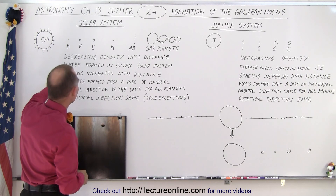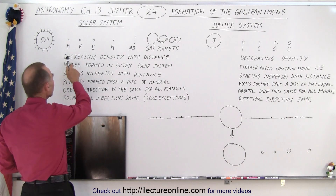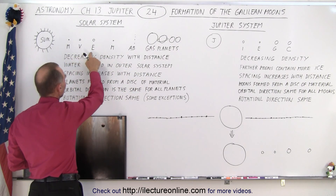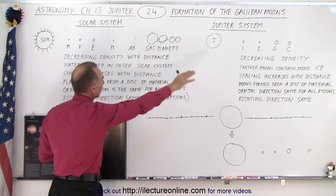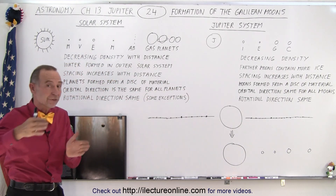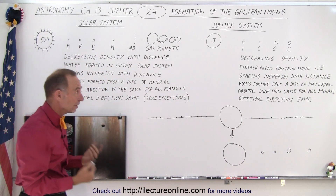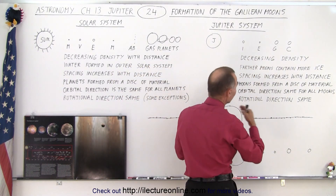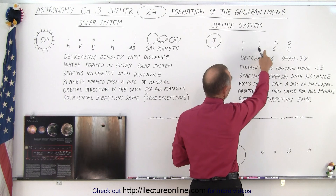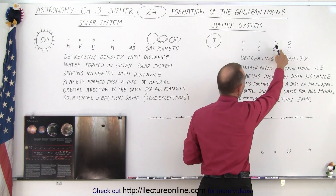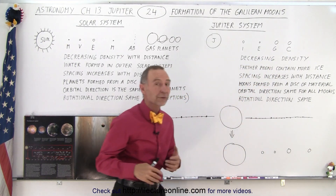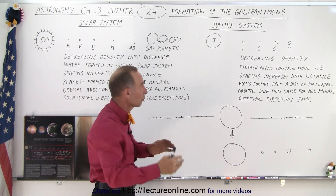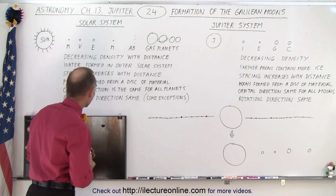Then we look at the spacing, and it turns out we see increasing spacing as we go further and further out — from Mercury to Venus to Earth to Mars, the asteroid belt, and the gas planets are all farther and farther spaced apart. We see the very same thing between the moons: from Io to Europa there's a distance of about 350,000 kilometers, then about 400,000 kilometers, and then a distance of a little over 800,000 kilometers. So we see that increasing spacing between the moons just like we see in the solar system.